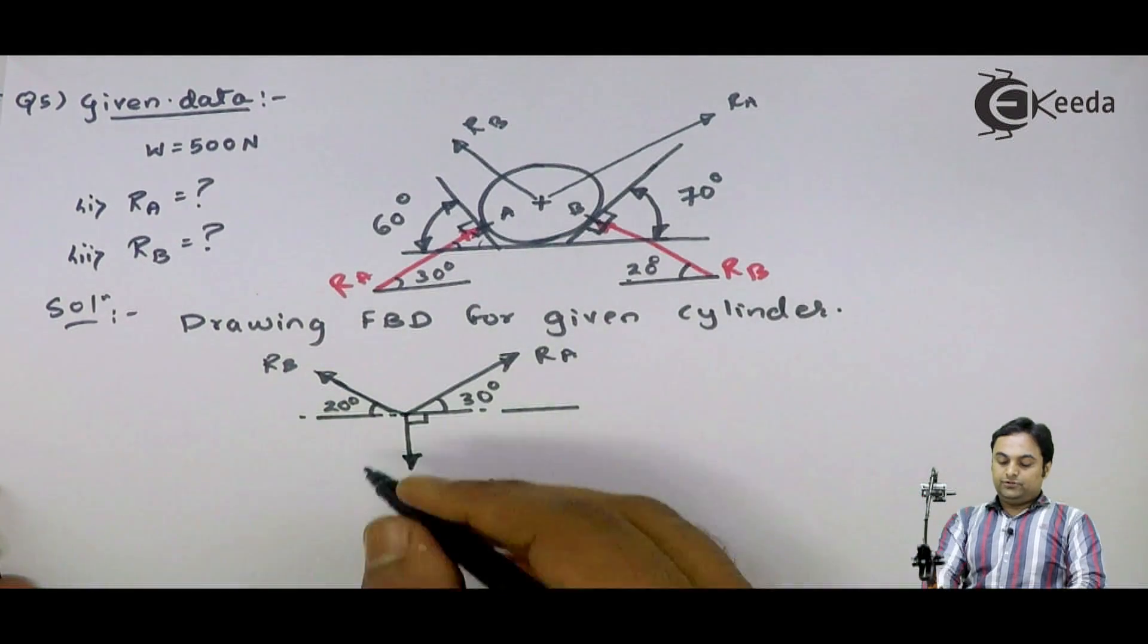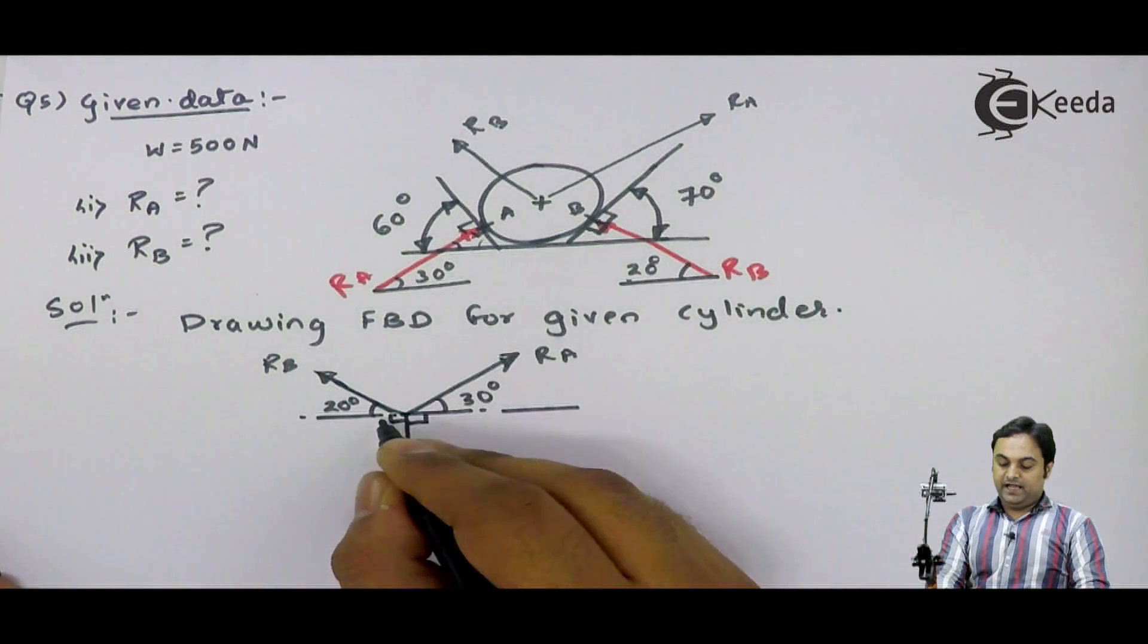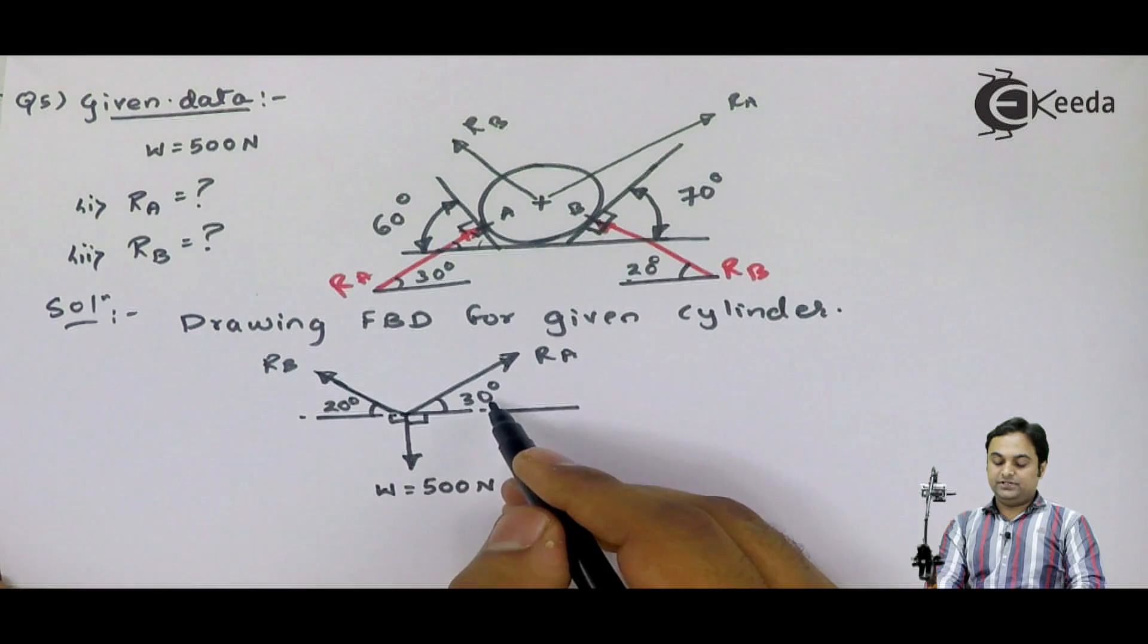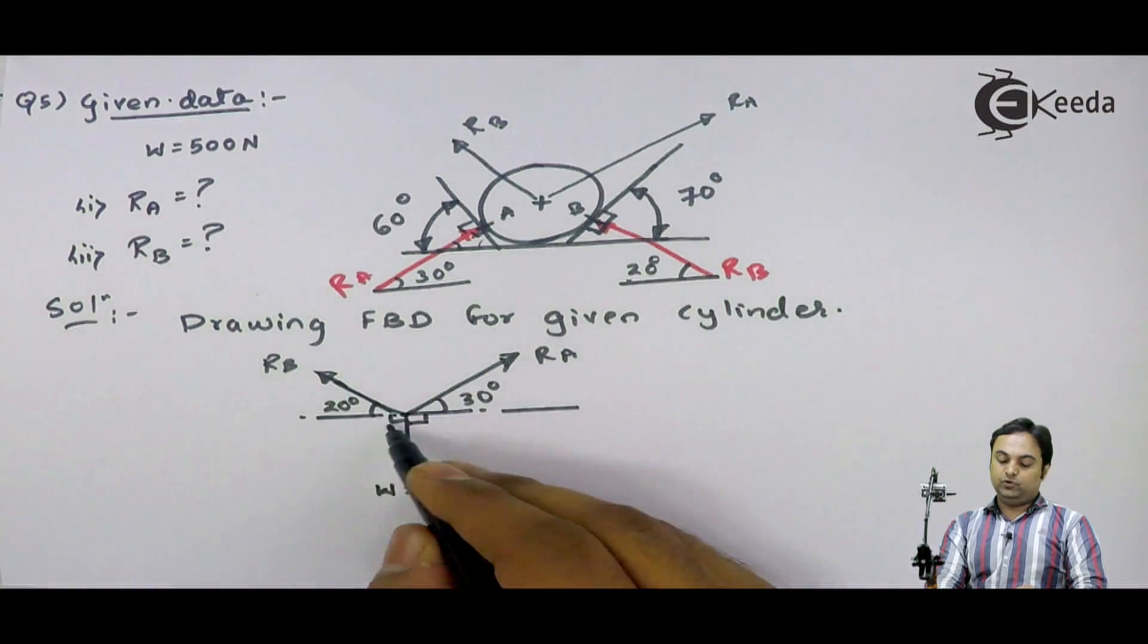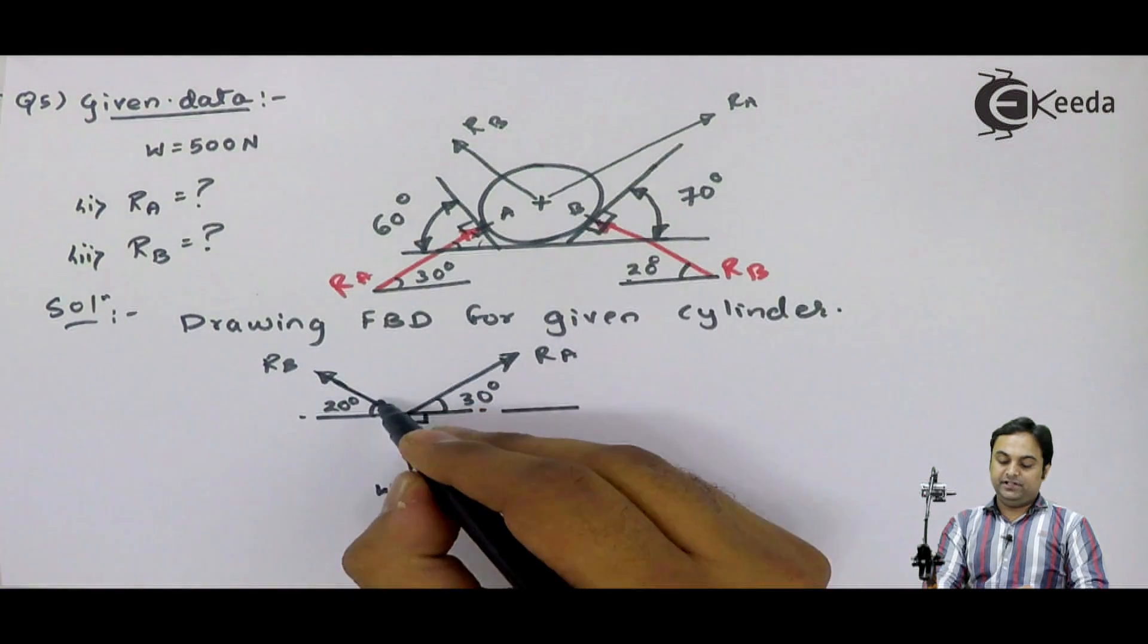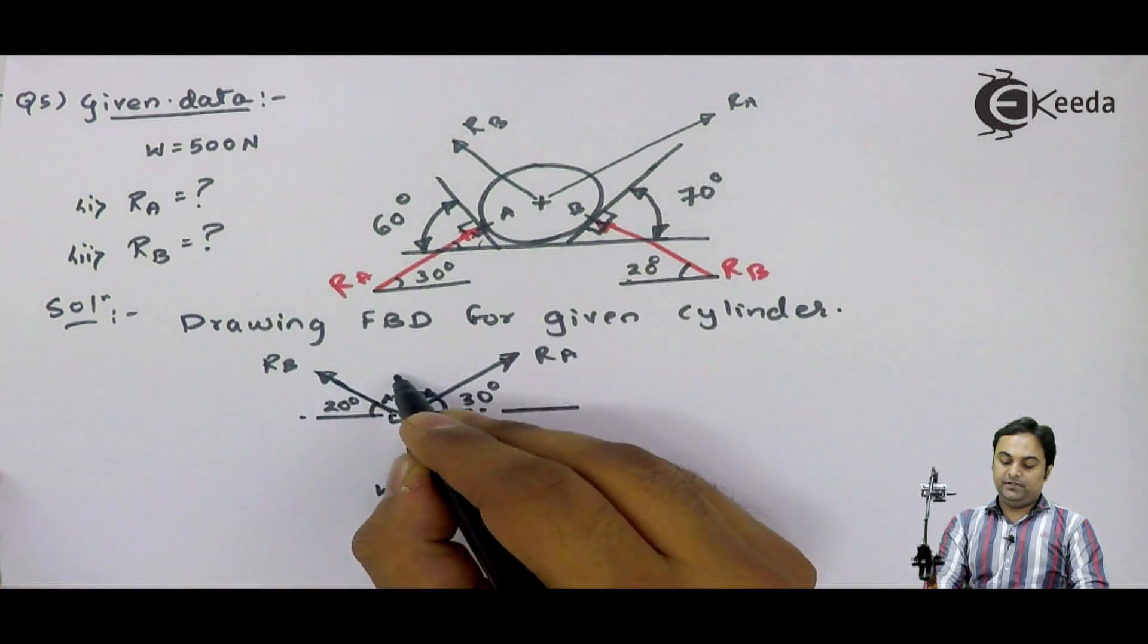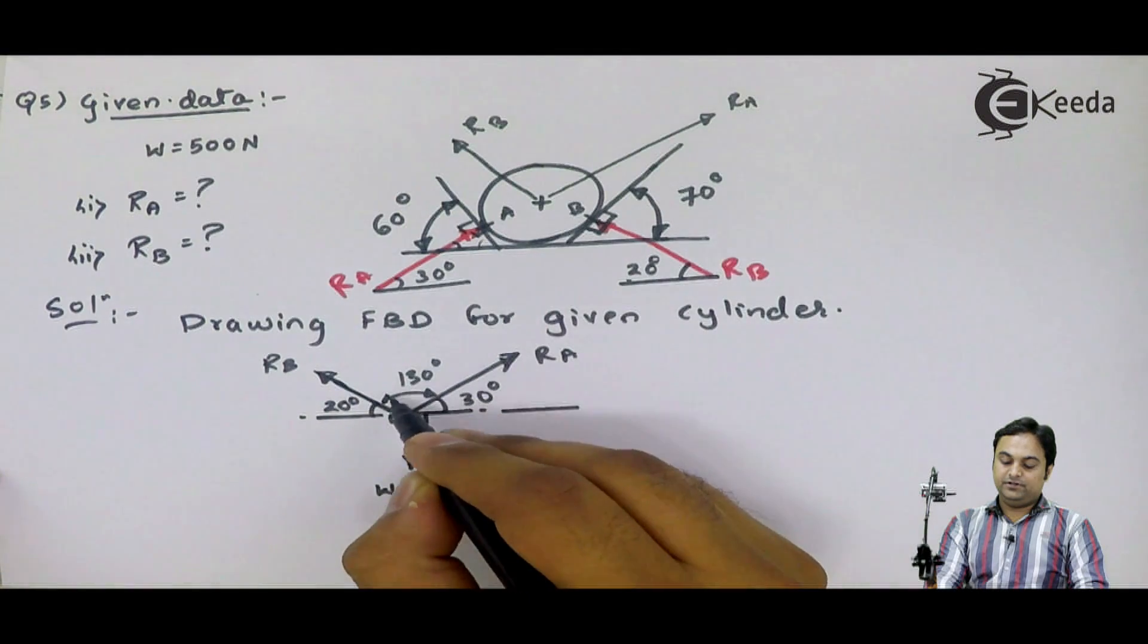If we look into this problem, we are getting the angles here. 20 plus 30, that gives me 50 degree. And from total 180, if I subtract 50 degree, this angle between RA and RB, it is 130 degree.